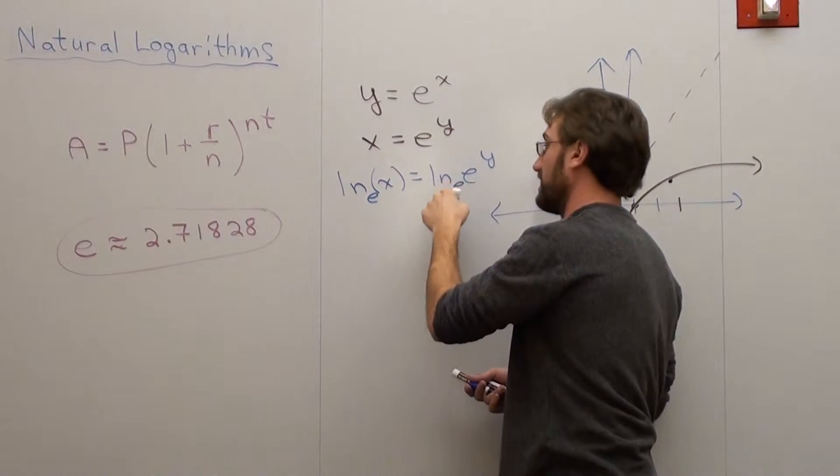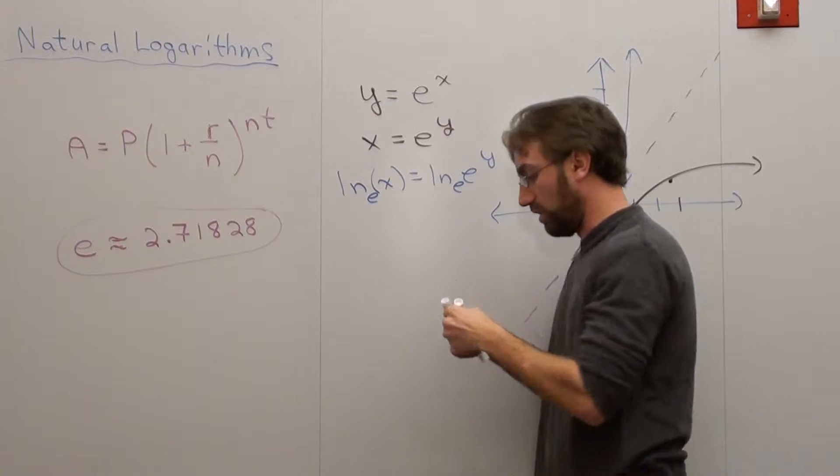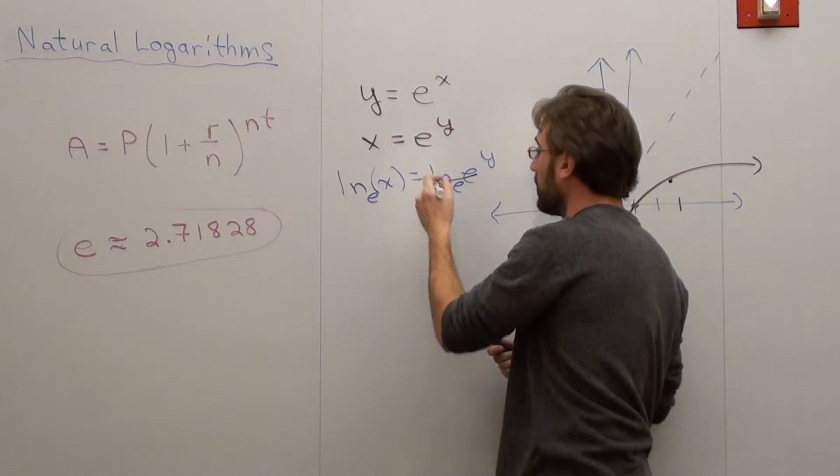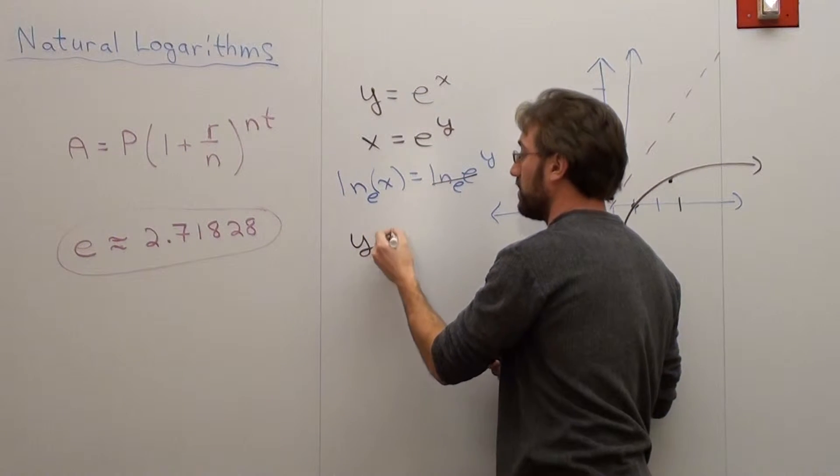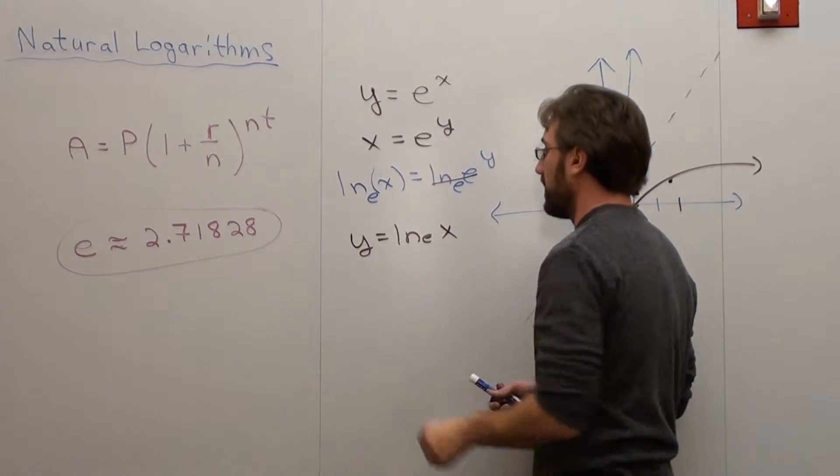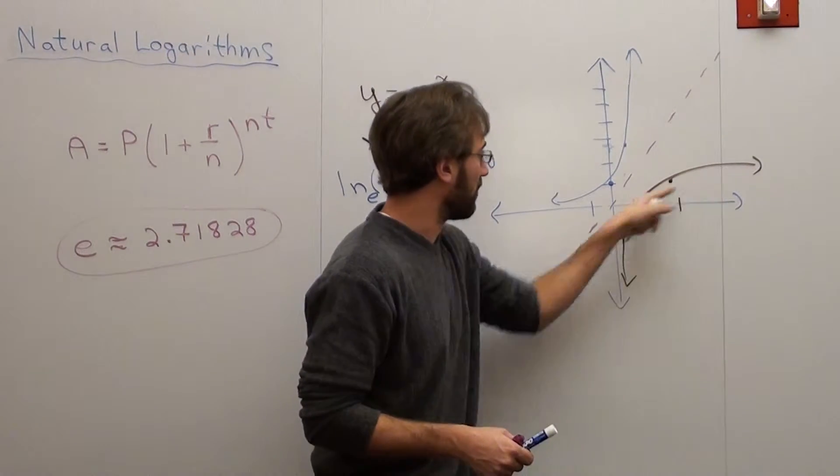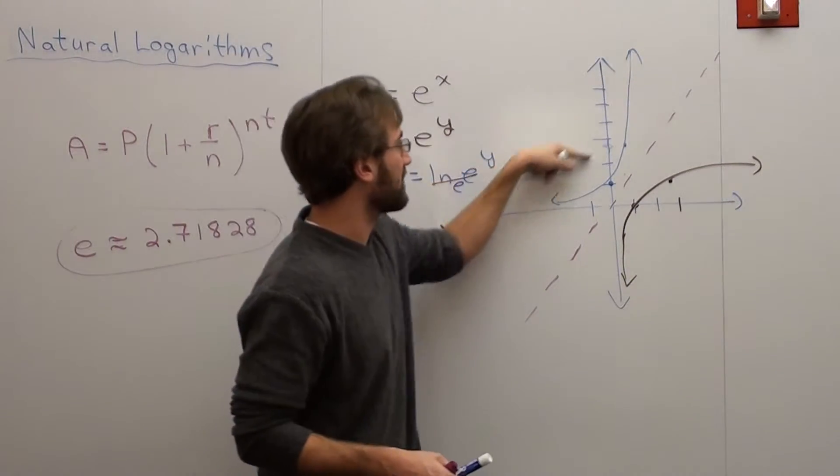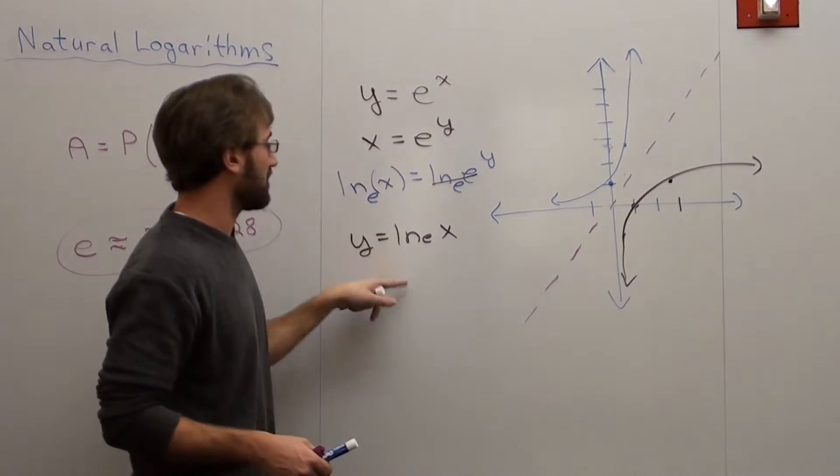Now, if it has a base of e and the power, it follows the same rules of logarithms. Really quite cool. So y equals natural log base e of x. And that's this graph right here, this brown one right here. Y equals e to the x is this one right here. This and this are the same thing.